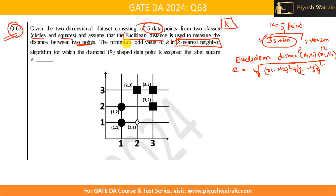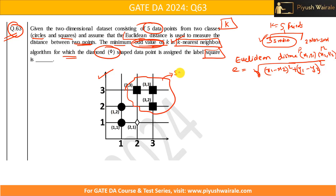We need to find the minimum odd value of k in the KNN algorithm for which the diamond-shaped data point is assigned the label square. In this dataset there are five data points — three classified as square and two as circle — and a new diamond-shaped point. We need to find the minimum odd k such that this diamond is assigned the label square.